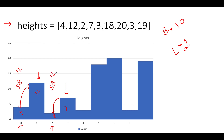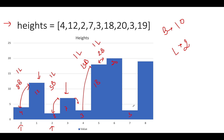The next height is lower so we can jump — no bricks or ladder needed. Then from height 3 to 18, the difference is 15 units — either 15 bricks or 1 ladder. Next, from 18 to 20, the difference is 2 — either 2 bricks or 1 ladder. Then the next height is 3 so we can jump down for free. Finally from 3 to 90, the difference is 16 — either 16 bricks or 1 ladder.